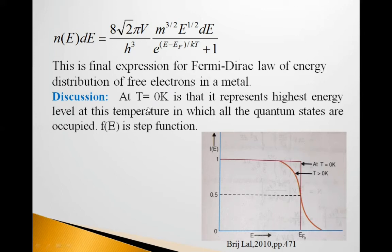Now, we will discuss this. At T equal to 0 Kelvin, it represents highest energy level at this temperature in which all quantum states are occupied. F is a function. See in this graph. Here, F value is 1 at T equal to 0 Kelvin. Up to EF0, this F function value is 1. But at EF0, it goes suddenly to 0. So, it is a step function.